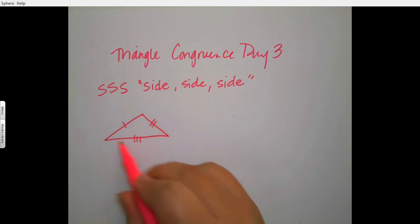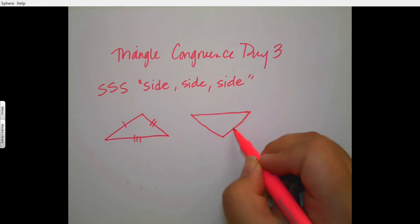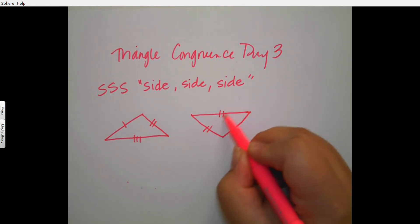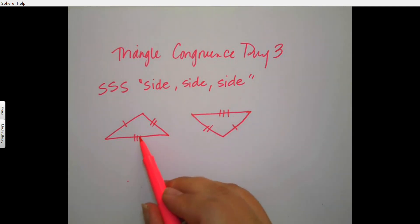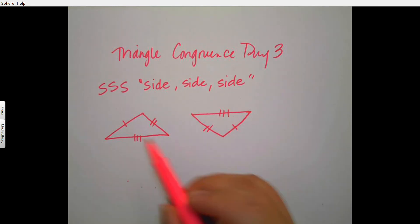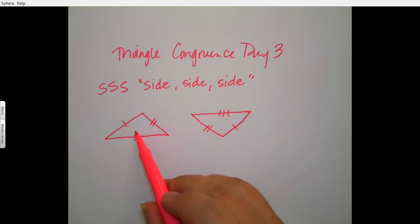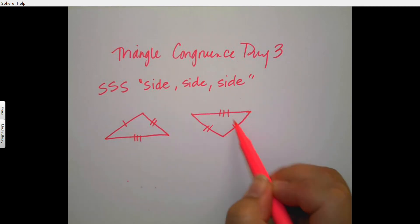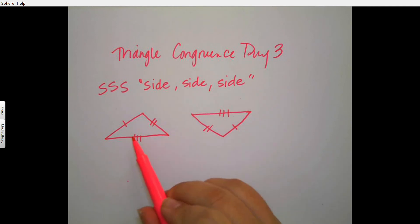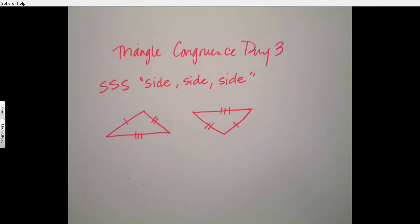This is our original triangle and we are comparing it to another triangle. We could say triangle ABC is congruent to triangle DEF, and the hash marks match up — one, two, and three — so we say triangle is congruent to triangle.